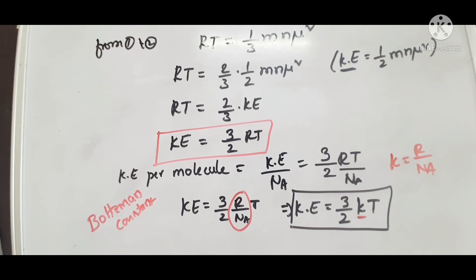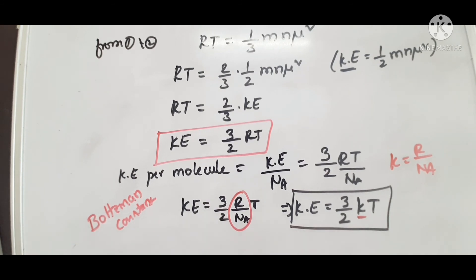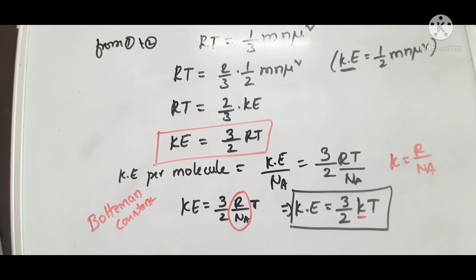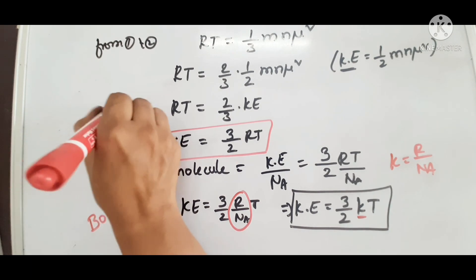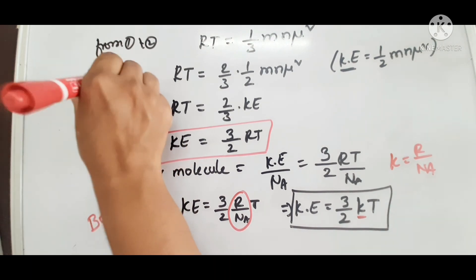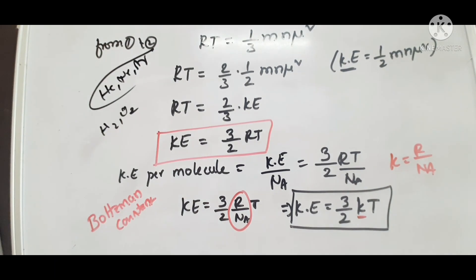All these derivations are very important. Most of the numericals in competitive exams like IIT and NEET come from kinetic energy and gas state topics. All the derivations and equations are valid for monoatomic gases and ideal gases. For diatomic gases like hydrogen or oxygen, they are not valid. Monoatomic gases like neon and argon — these equations are valid.